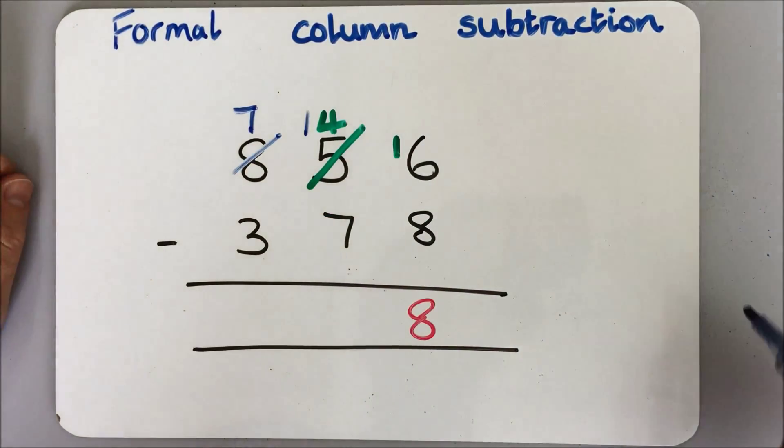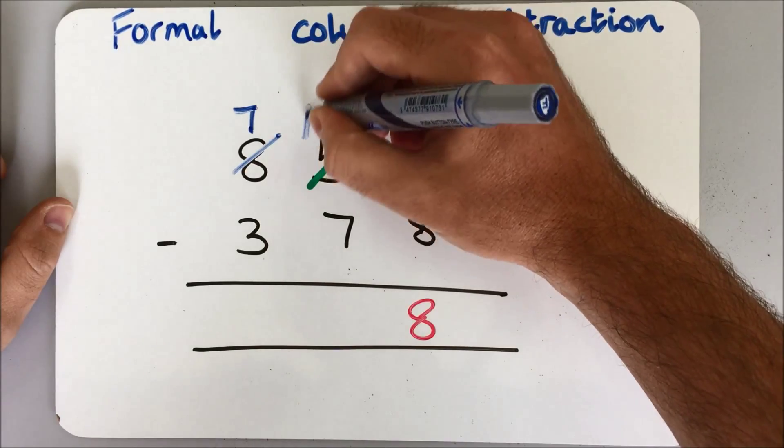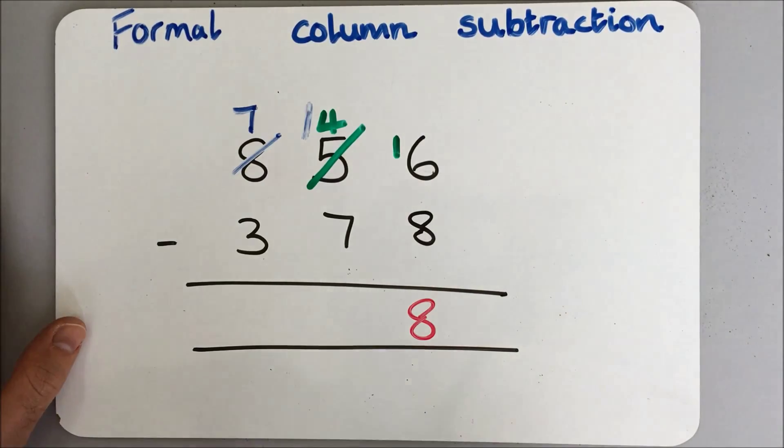Now I've got 40 take away 70. Again that 7 is too big, so I'm going to need to exchange from my hundreds. So I'm going to exchange just like that, turn that to take a 100, which is 10 tens.